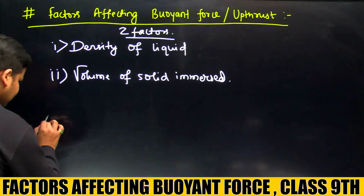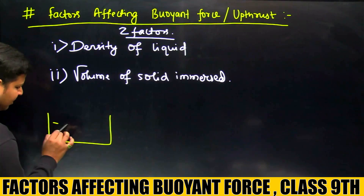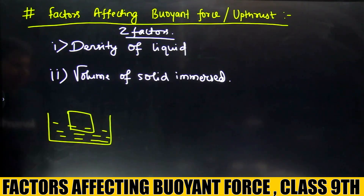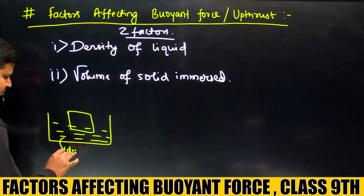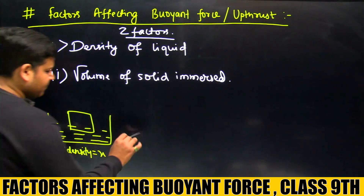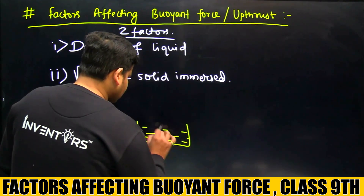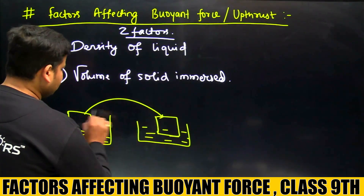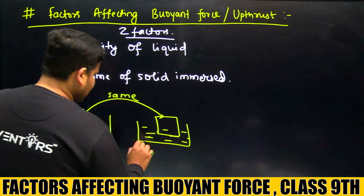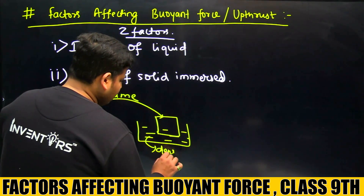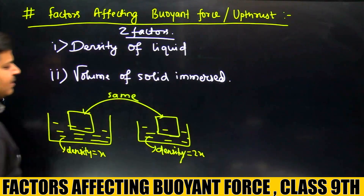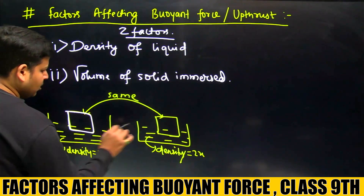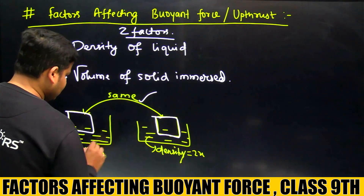माल लीजिए यहाँ पे एक liquid है और इसमें आप एक object डुबा रहे हैं। इस liquid का density माल लीजिए x है। फिर आपने यहाँ पे दूसरा बरतन लिया, उसमें भी liquid है और वही object है, लेकिन यहाँ liquid बदल दिया है। यहाँ जो liquid है उसकी density 2x है। दोनों object same हैं, लेकिन liquid same नहीं है।